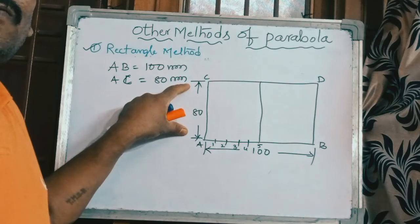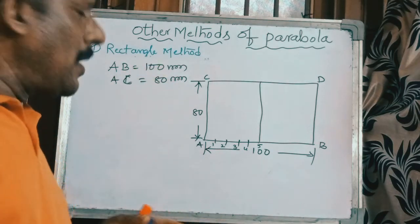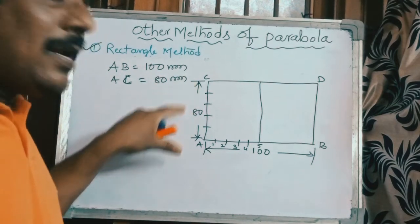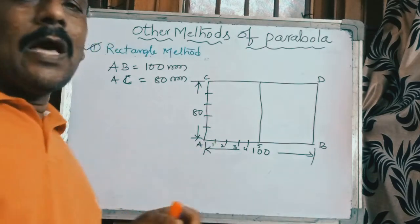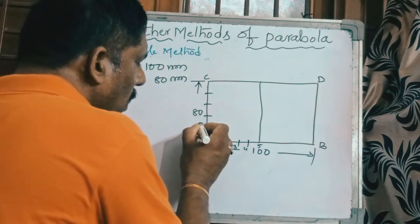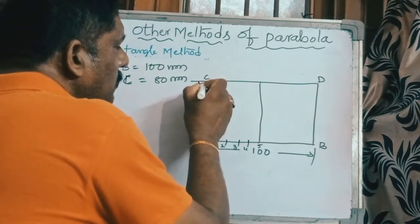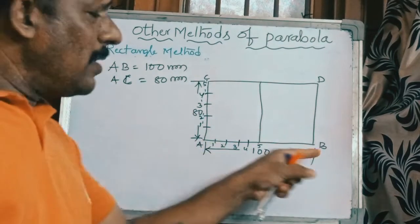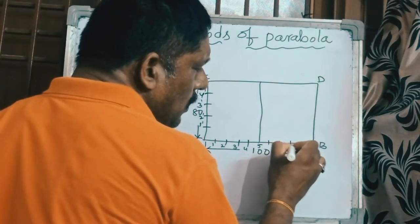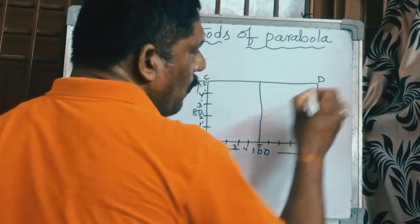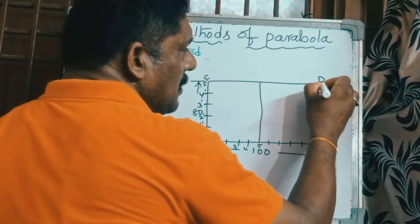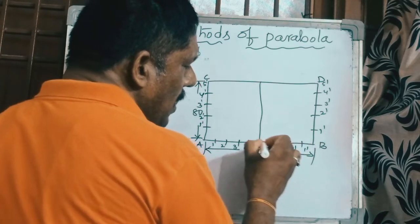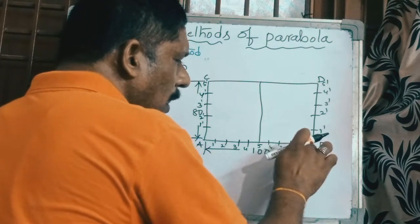In the same manner, divide the full minor axis — 80 mm total — into five equal parts vertically. You can divide directly or use the indirect method from geometrical constructions. Number these: one, two, three, four, five. Do the same on the other side, numbering them one-dash, two-dash, three-dash, four-dash, five-dash on both sides.